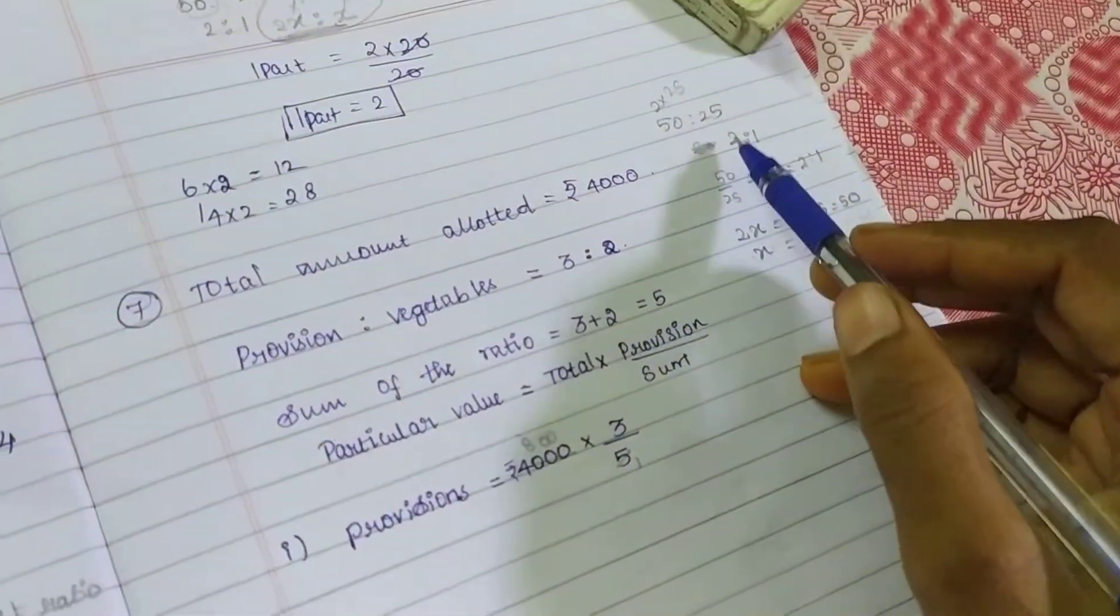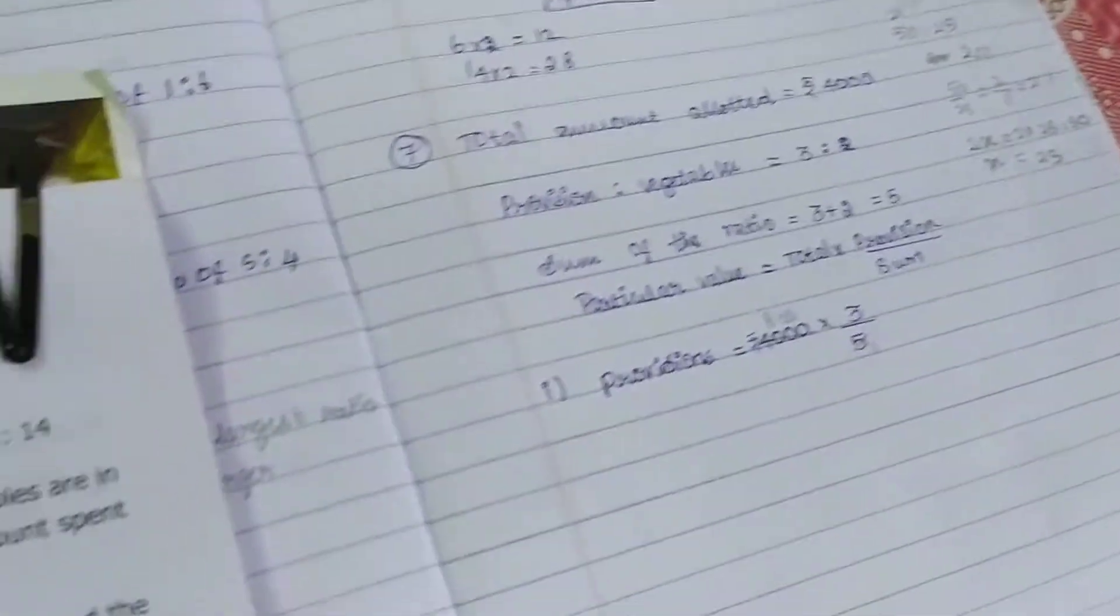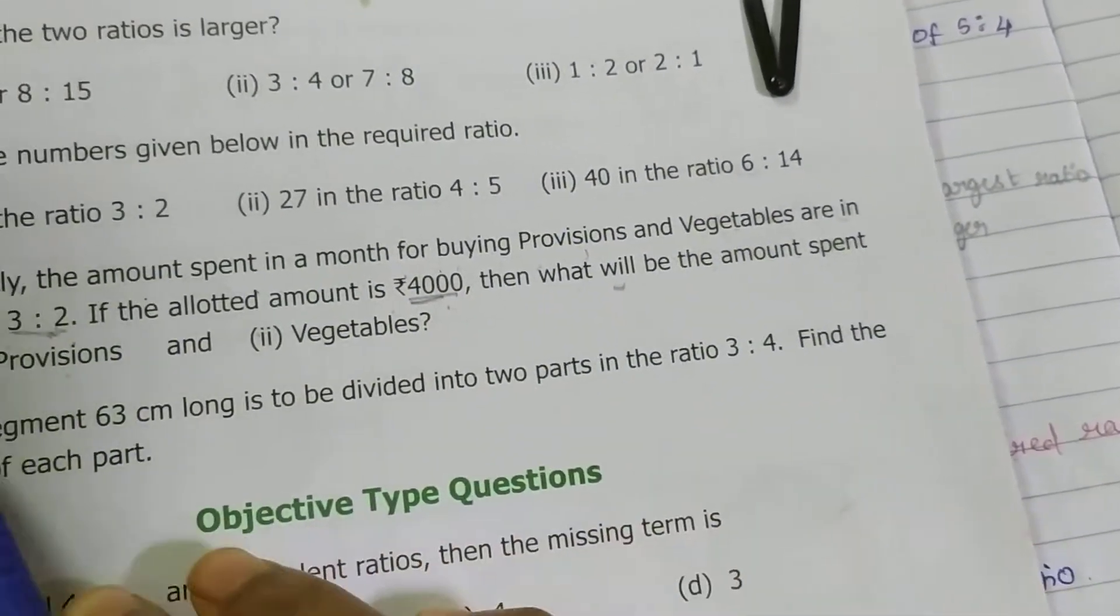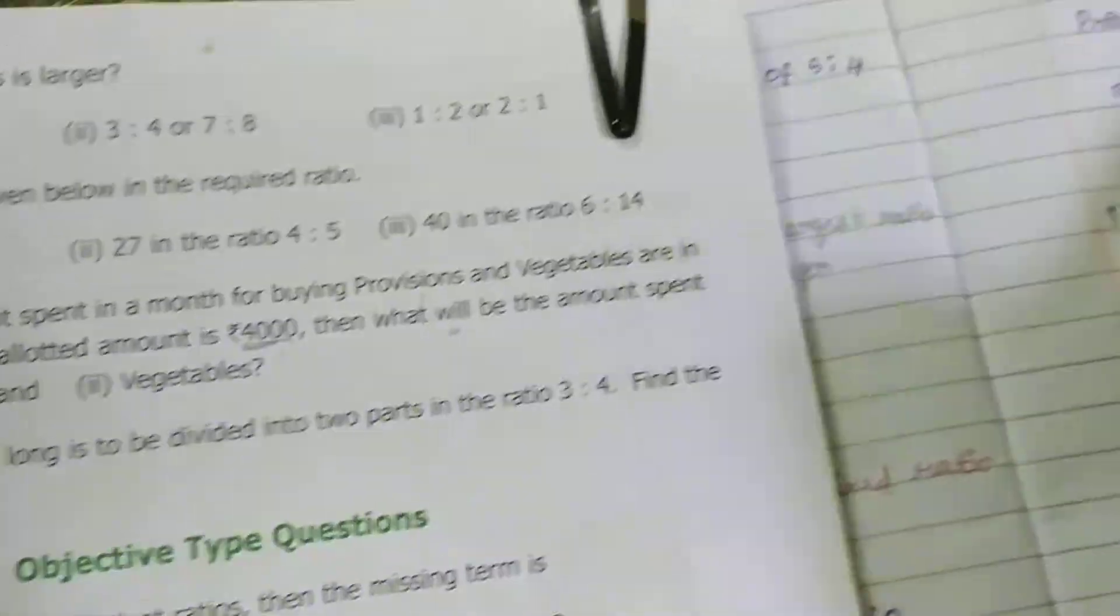So they give the ratio, that's it. In the question, the total amount is 4000. What amount spent on provisions and vegetables, they are asking.